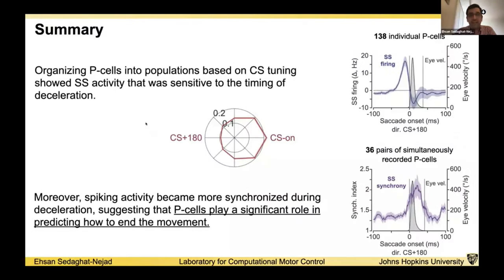Overall, our results show that if we organize P-cells into populations based on CS tuning, then the SS firing rate shows activity that will predict the end location of the eye movement and the duration of eye movement. And more importantly, if you look at the synchronization between the Purkinje cells, the activity shows higher synchronization just during the deceleration phase of the eye movement. So all in all, P-cells play a significant role in predicting how to end the movement. Thank you.